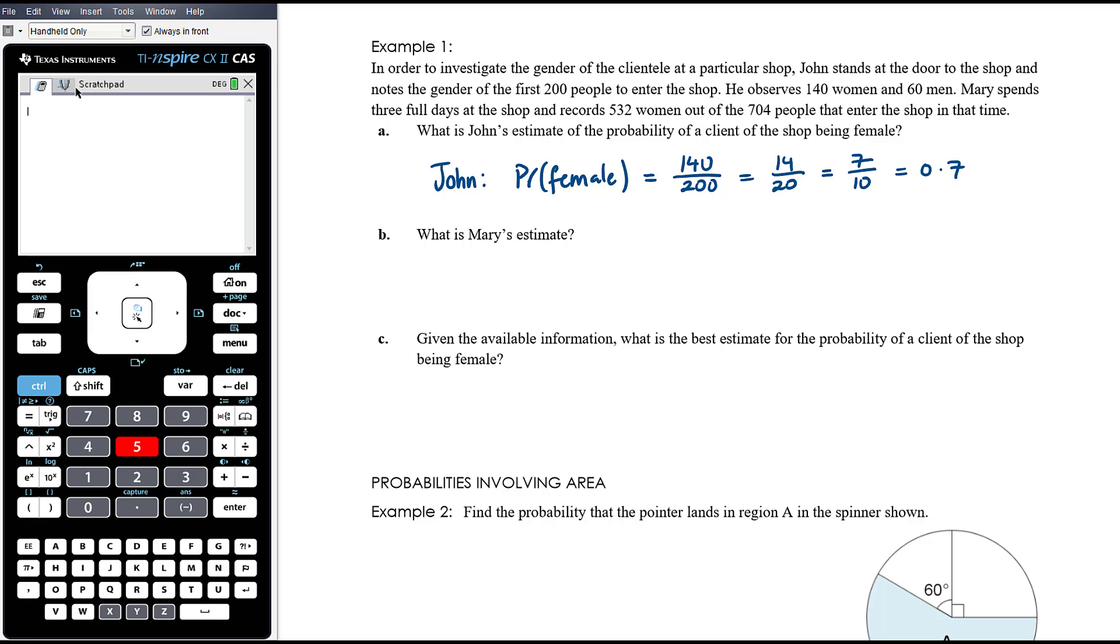What is Mary's estimate? So Mary saw 704 people. The probability of a female according to Mary is 532 out of 704. Just so we can compare those, I'm going to get my CAS to simplify that. 532 out of 704 simplifies to 133 over 176. I'm just going to get a decimal approximation, which is about 0.7557. So she got a slightly higher proportion than John.